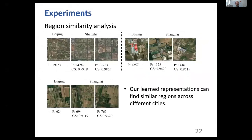We verify whether the learned representations can be used to depict the similarity between two regions. We randomly select three satellite images of Beijing with varying populations and compute the cosine similarity between the representations of the selected images and all images of Shanghai. From this visualization result, we can conclude that our learned representation can find similar regions across different cities with high performance.